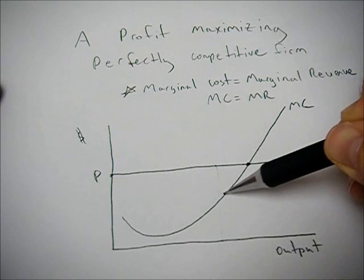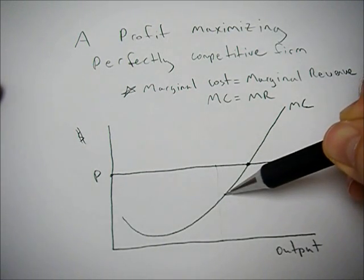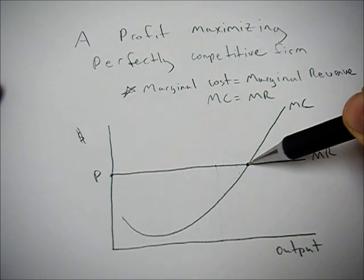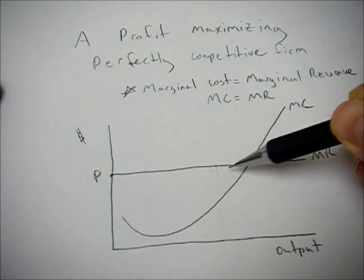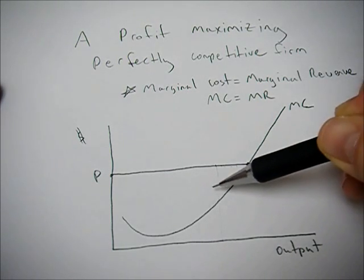So if you decide to produce one more unit, you're going to sell it for more than it costs you to make it. So you'll continue to do that until you get to the point where they're equal. So you're losing out on potential profit if you're to the left of this point.